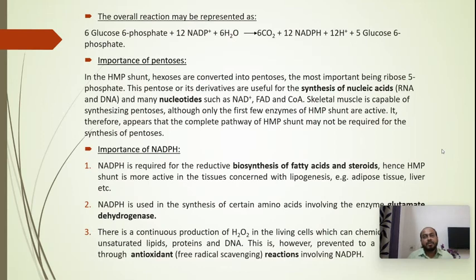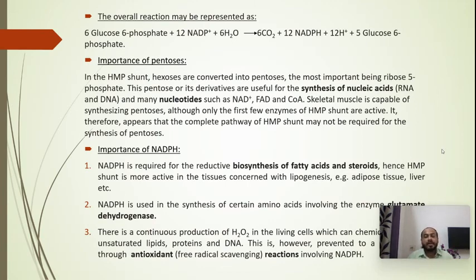Next, we will discuss the importance of NADPH, which is obtained from the oxidative phase of the pentose phosphate pathway. The first and foremost importance is that NADPH is required for the reductive biosynthesis of fatty acids and steroids. Hence, HMP shunt is more active in tissues concerned with lipogenesis, such as adipose tissue, liver, adrenal gland, testis, and lactating mammary gland. NADPH is also used in the synthesis of certain amino acids.